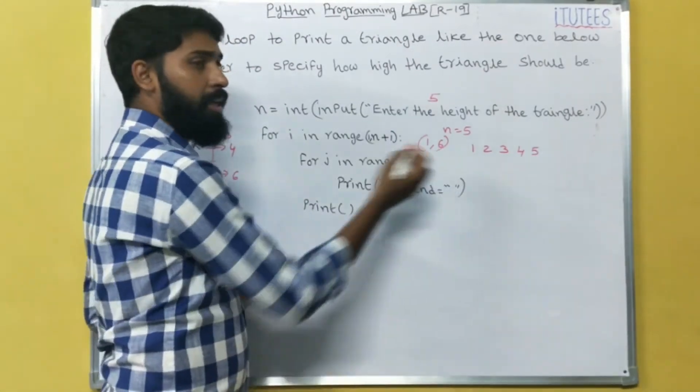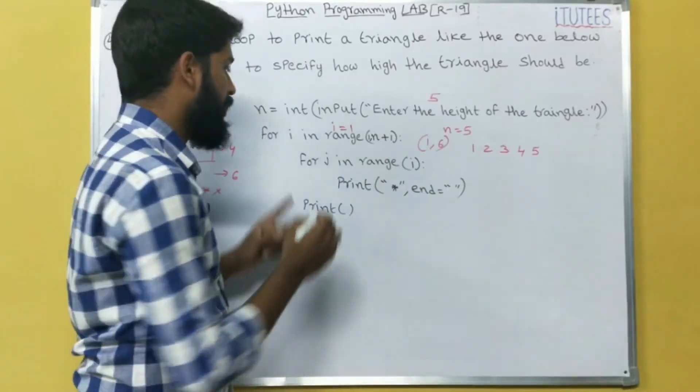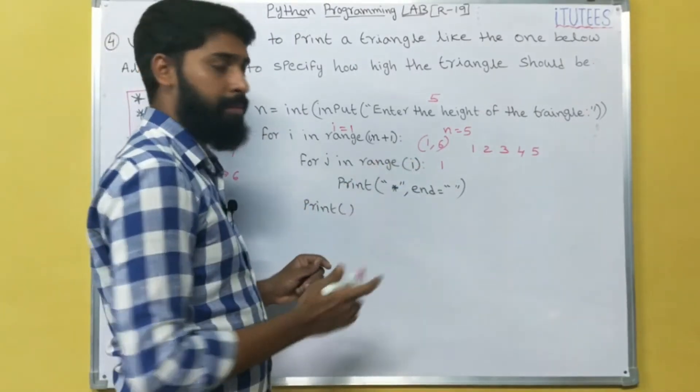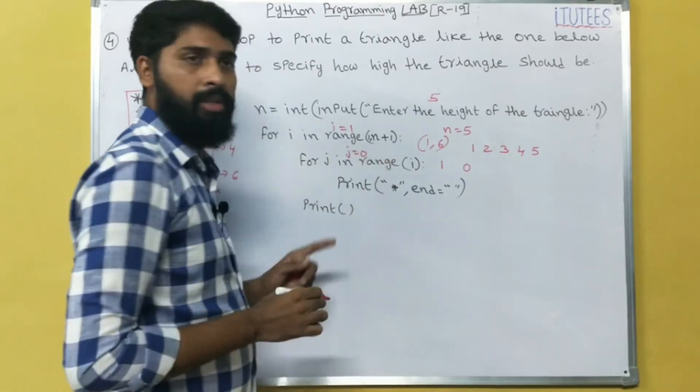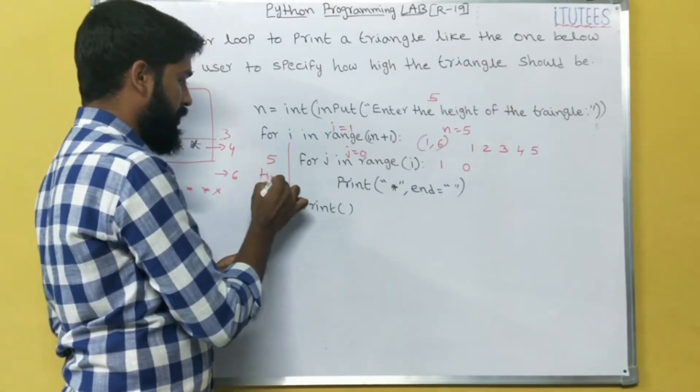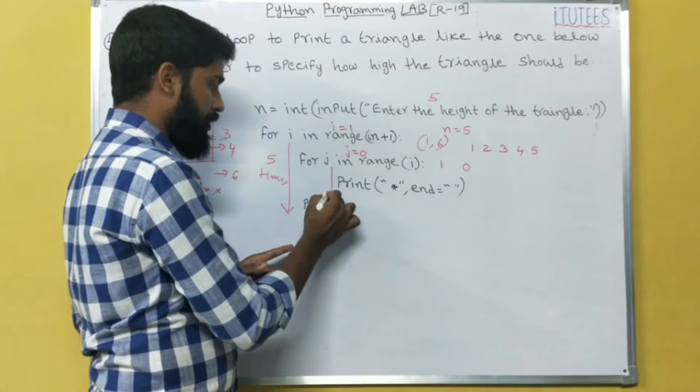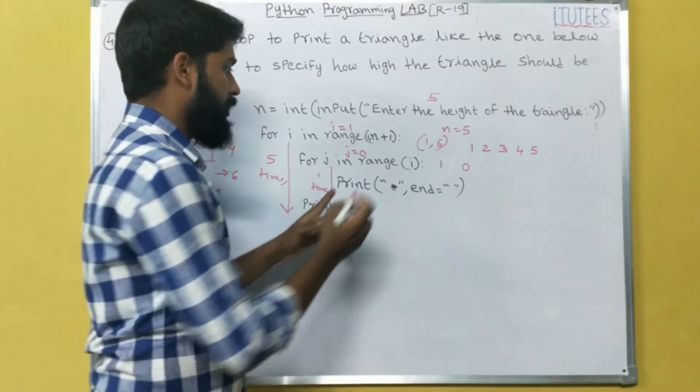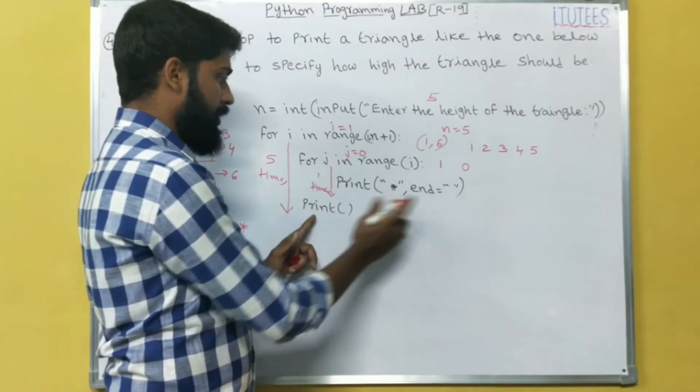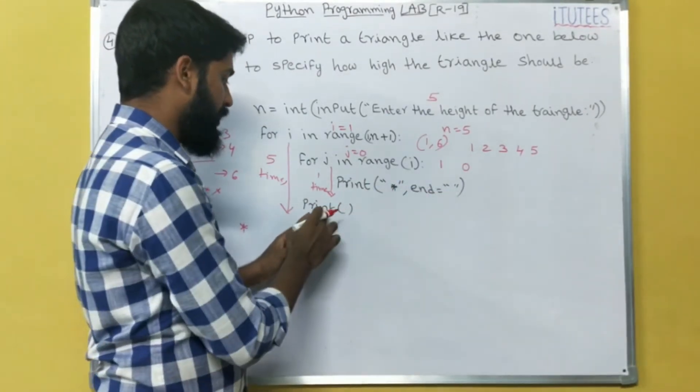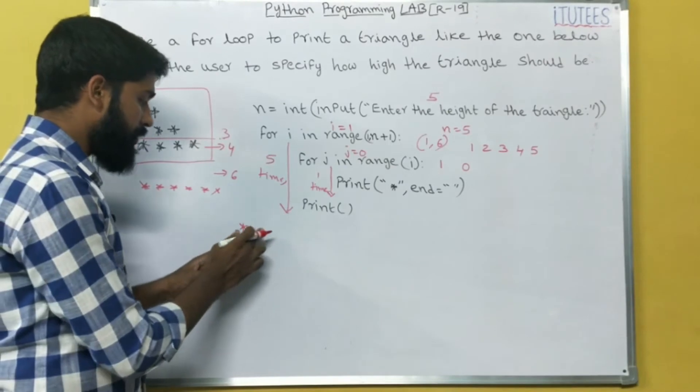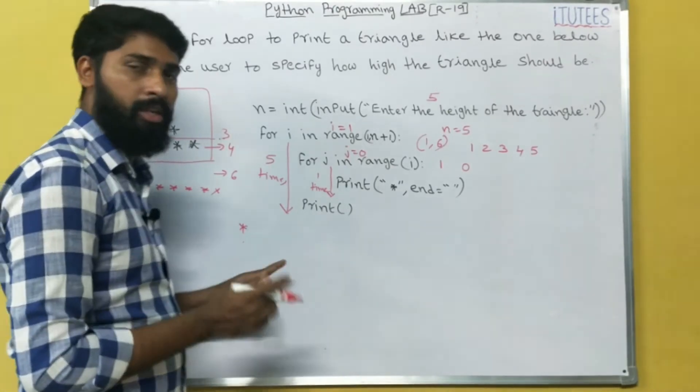So that means in first iteration i equals to 1. For j in range of i, that means here it returns only 1, so range of i means only 0, j value equals to 0. So that means in this case we enter into the loop 5 times. Here we enter into the loop only 1 time. So that means j equals to 0, so print asterisk, it prints asterisk. Then print to change the cursor to the next location.